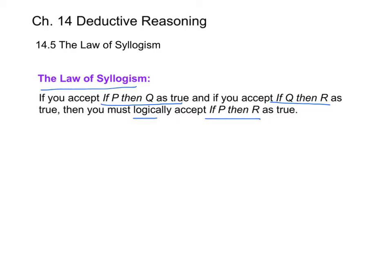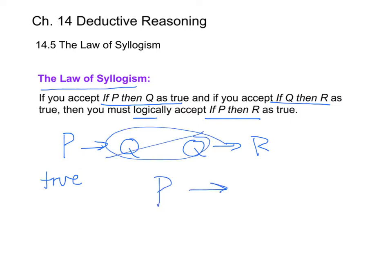So essentially if we have P then Q, and we have Q then R, and we say that P is true, then we can essentially skip Q and say just if P then R.